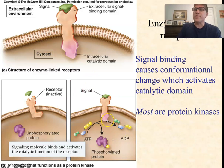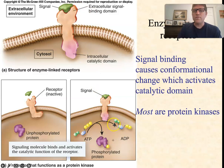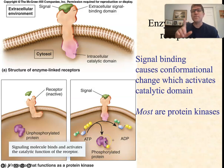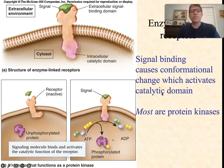After step one of receptor activation, we've got to relay the signal somewhere inside the cell — this phosphorylation is the first step in that. So an enzyme-linked receptor is a protein kinase that, upon activation by binding with the signal, uses ATP to phosphorylate a protein. In many cases, as we'll see in the next video, the protein that it phosphorylates is also a protein kinase now in its active state, and it will go on to phosphorylate something else.